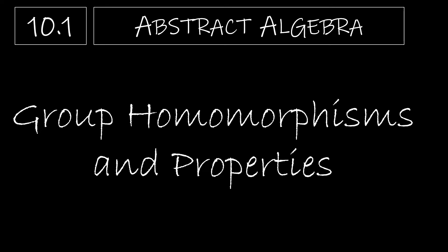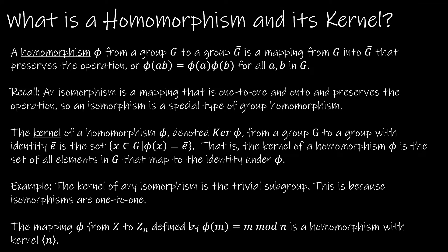In this video, we'll take a look at group homomorphisms and their properties. What exactly is a homomorphism? We've talked about isomorphisms in the past, and an isomorphism was a mapping that was one-to-one and onto and preserved the operation. A homomorphism simply preserves the operation — it doesn't have the added properties of being one-to-one and onto. So an isomorphism is just a special type of homomorphism; it's a little bit stronger because it's one-to-one and onto.